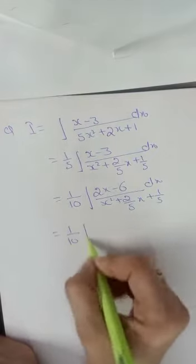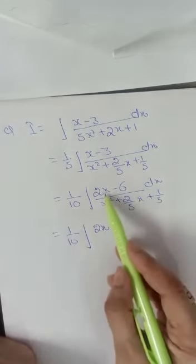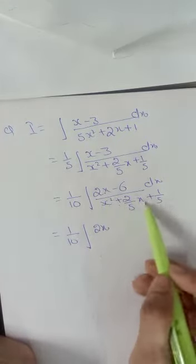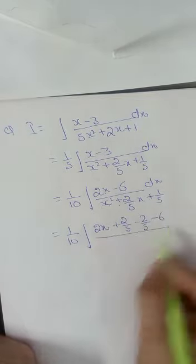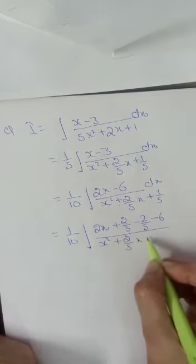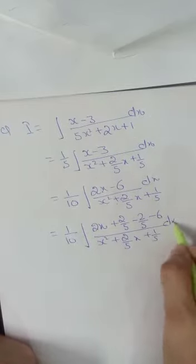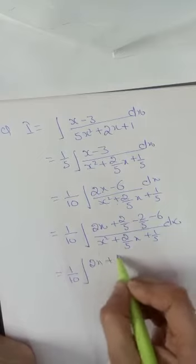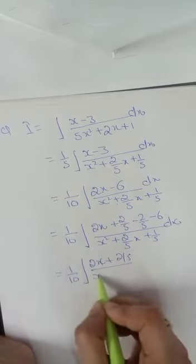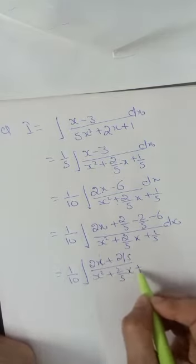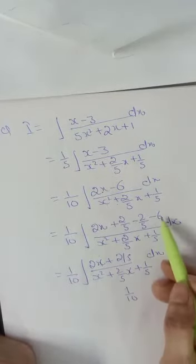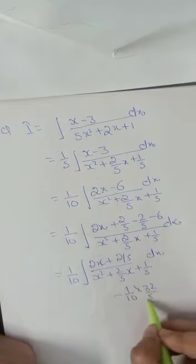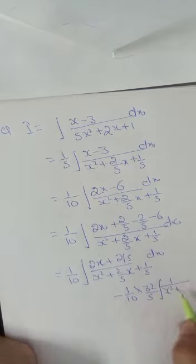Now divide and multiply appropriately. We get 1/10 times (2x). The derivative of x² is 2x, plus the derivative of (2/5)x is 2/5. So we add and subtract 2/5, giving the numerator as (2x + 2/5) minus 6, that is (2x + 2/5 - 32/5), all over (x² + (2/5)x + (1/5)) dx.